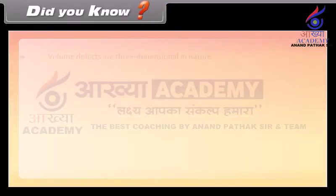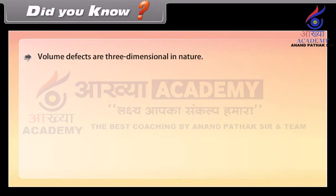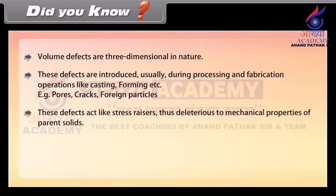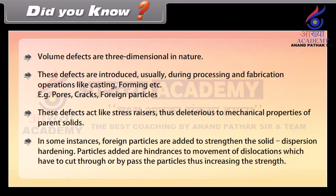Did you know? Volume defects are three-dimensional in nature. These defects are introduced usually during processing and fabrication operations like casting, forming, etc. Examples include pores, cracks, and foreign particles. These defects act like stress raisers and are thus detrimental to the mechanical properties of parent solids. In some instances, foreign particles are added to strengthen the solid through dispersion hardening, as they hinder the movement of dislocations, increasing strength.